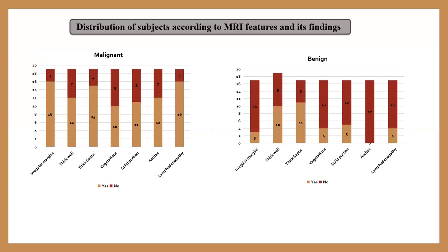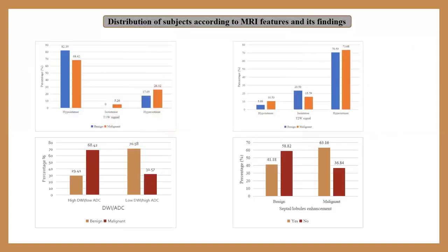Distribution of subjects according to MRI features and findings: most malignant cases showed irregular margins, thick wall, thick septa, vegetation, and solid portions, and were presented with ascites and lymphadenopathy. A few benign cases showed similar features. On T2-weighted signal images, around 82 percent of malignant cases showed hyperintensity. Around 68 percent of malignant cases showed high DWI signal and corresponding low ADC. Around 41 percent of benign cases and 63 percent of malignant cases showed septal and lobular enhancement.